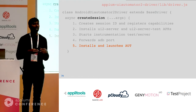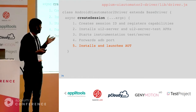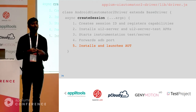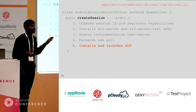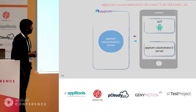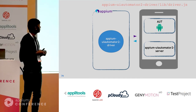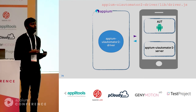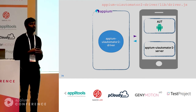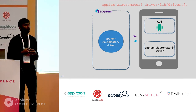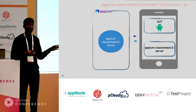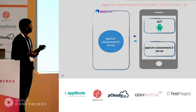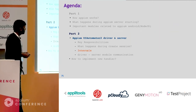To summarize the create session flow: the UiAutomator2 driver module sitting in the Appium server starts the server in the device, does port forwarding to enable requests, and starts the application under test. With that, we have the right platform to execute test cases — a server up and running, the application under test launched, and port forwarding in place.